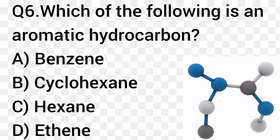Question number 6. Which of the following is an aromatic hydrocarbon? Option A: Benzene. Option B: Cyclohexane. Option C: Hexane. Option D: Ethene. The right answer is option A, Benzene.